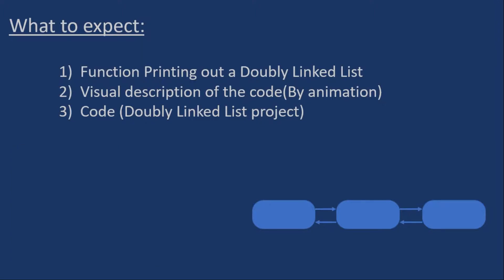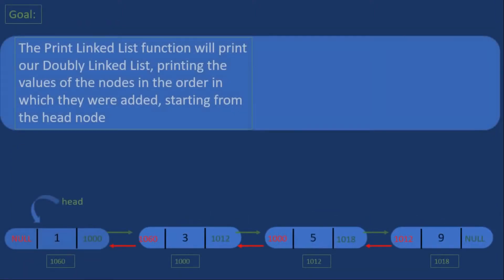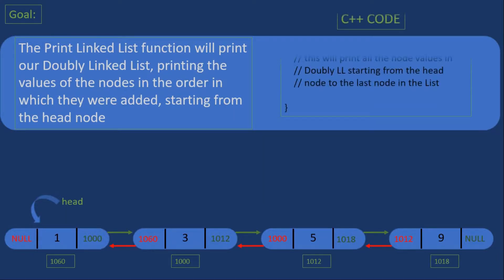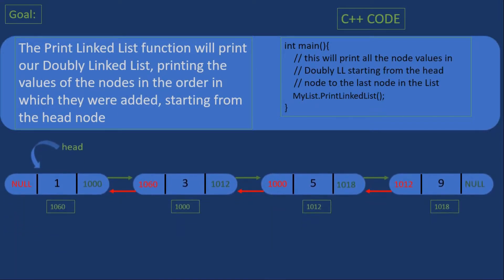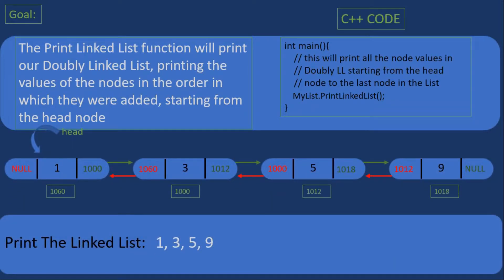The goal in this video is to create a function that will print our doubly linked list, printing the values of the nodes in the order in which they were added starting from the head node. So if we have an example doubly linked list with nodes with values 1, 3, 5, and 9, after we've created the function we can call it and it should print the values 1, 3, 5, and 9 in that order.